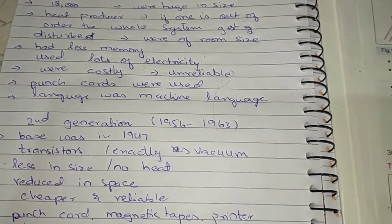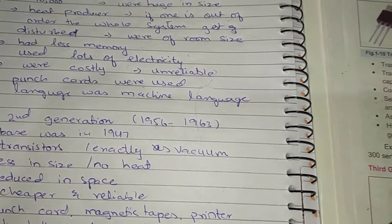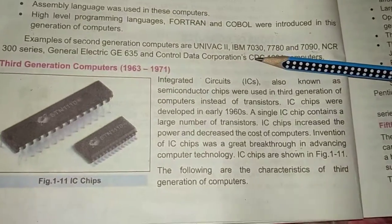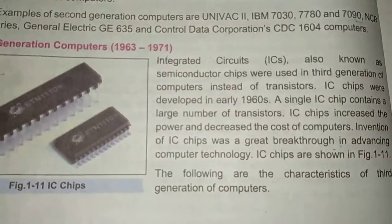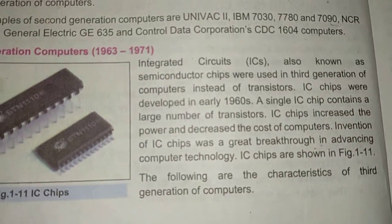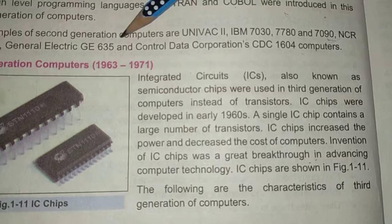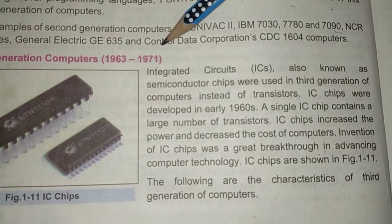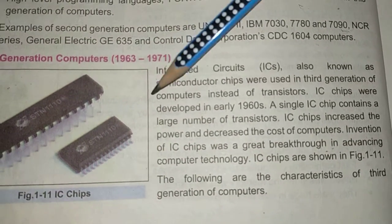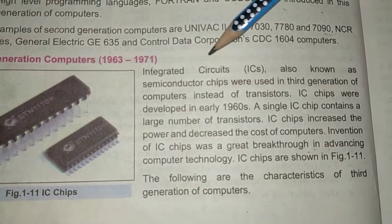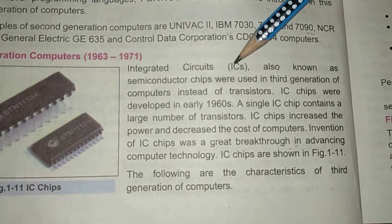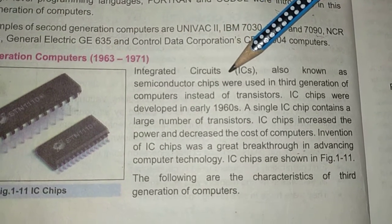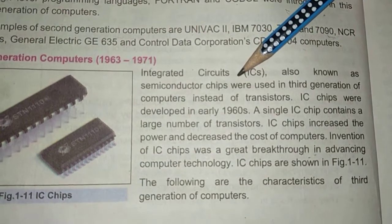Now moving towards the third generation. The third generation of computers spans from 1963 to 1971. This generation worked on ICs — integrated circuits.